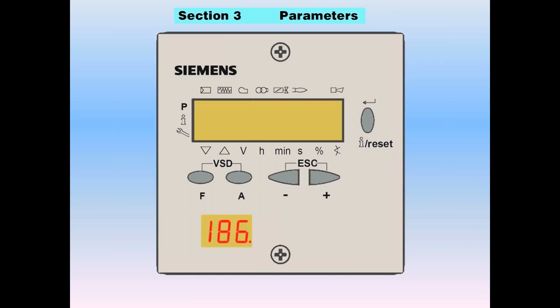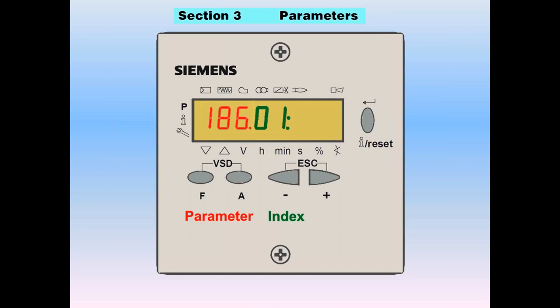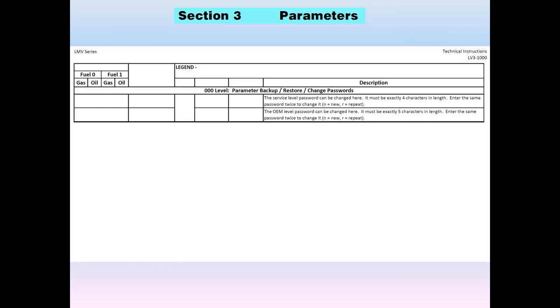Looking at the AZL of the LMV3, each parameter has at most three pieces: the raw parameter number, an index, and a value. For example, parameter 186 is flame failure response time; the index further details different settings within 186. When setting parameters on the AZL screen, you'll often need the parameter number, an additional index, and then the actual value of the parameter setting.